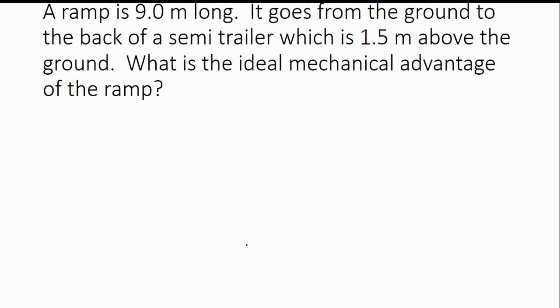That takes us to our last one. In this problem, a ramp is 9 meters long. It goes from the ground to the back of a semi-trailer, which is 1.5 meters above the ground. What is the ideal mechanical advantage of the ramp? So we're solving for ideal mechanical advantage, which if you recall, is IMA. So we're using the equation that solves for IMA, which is ideal mechanical advantage equals distance input divided by the output distance.